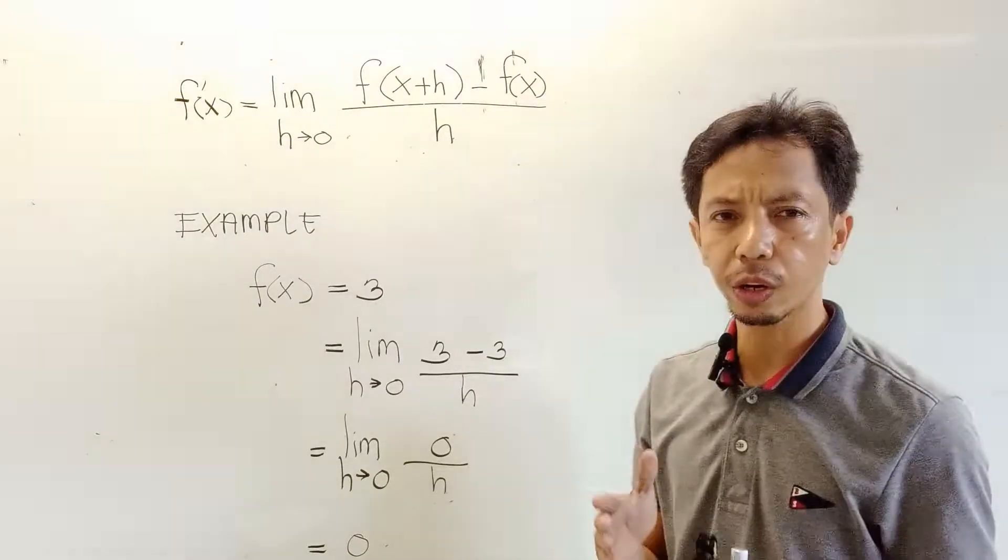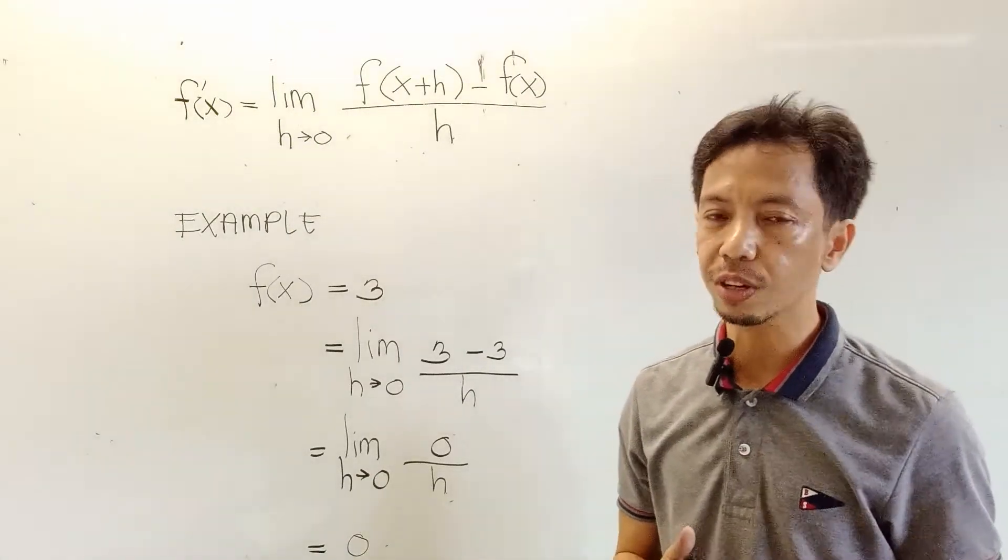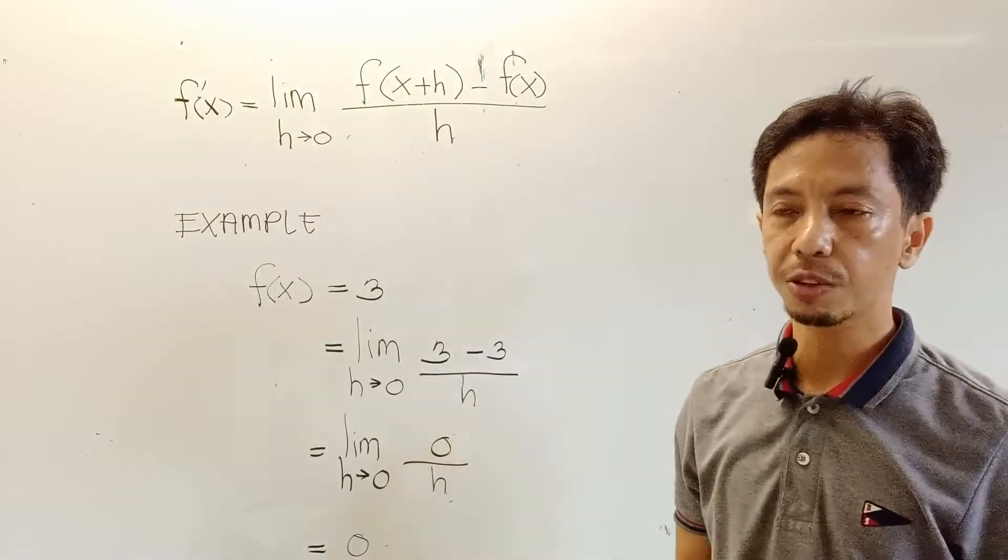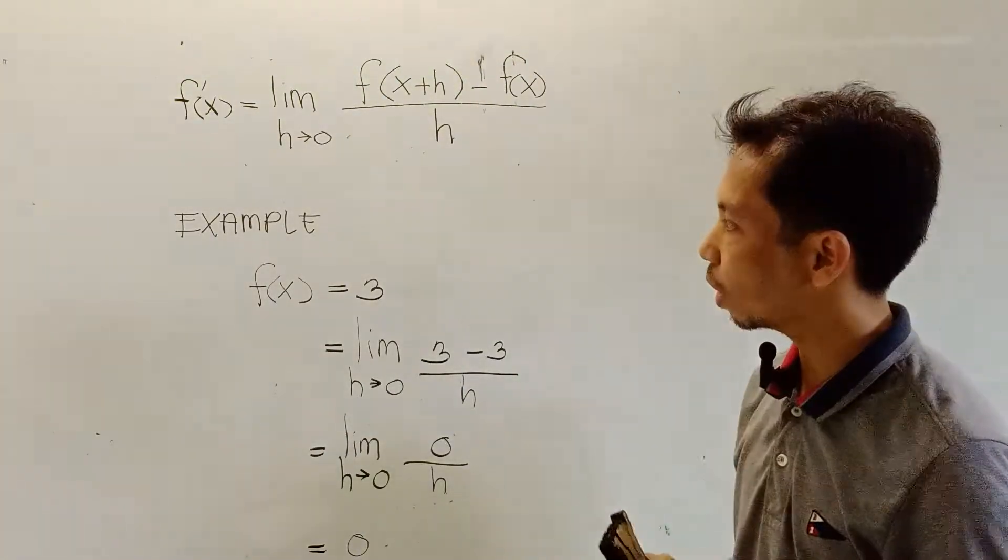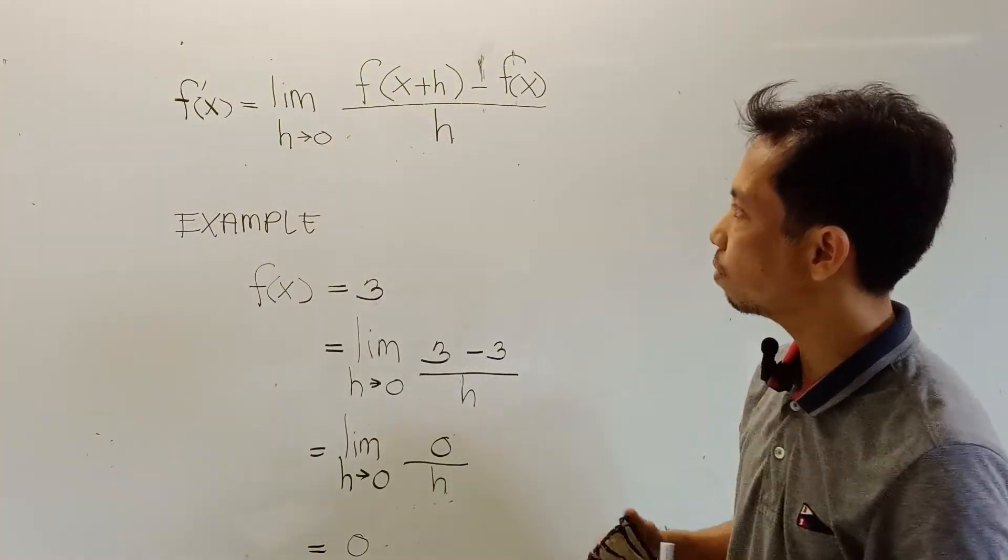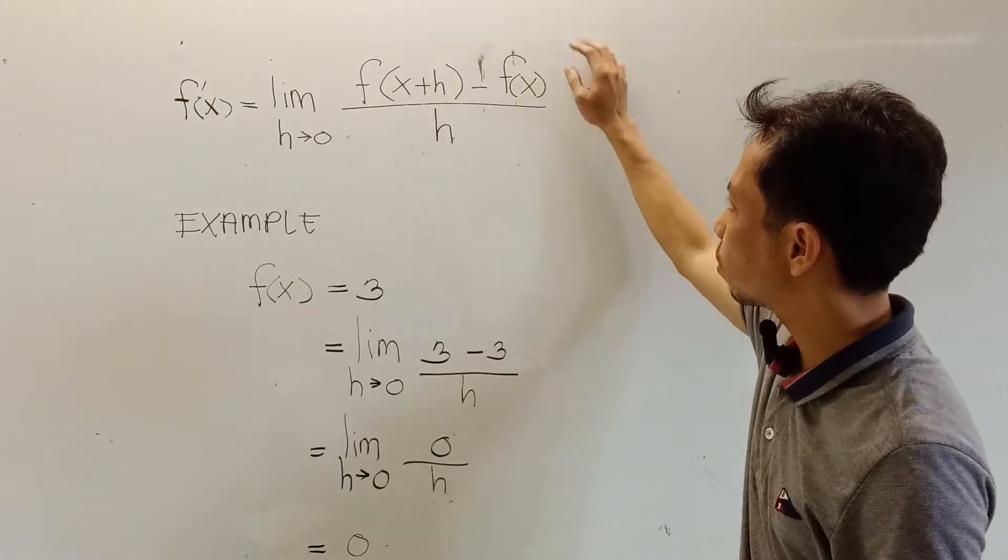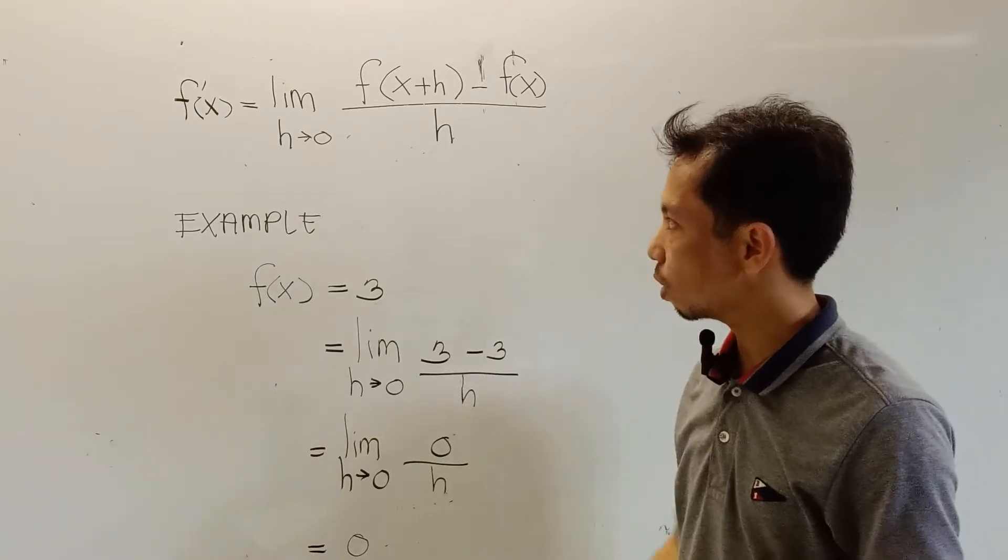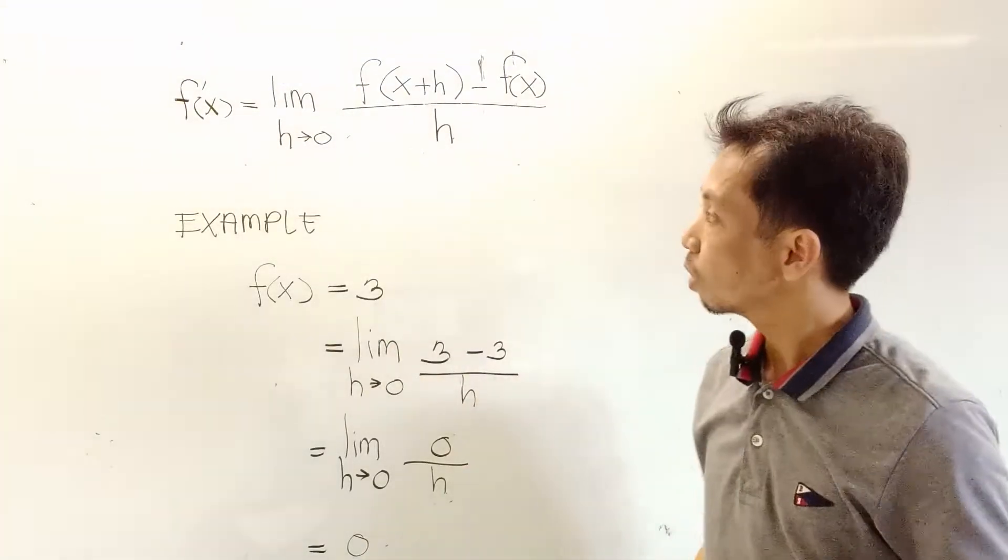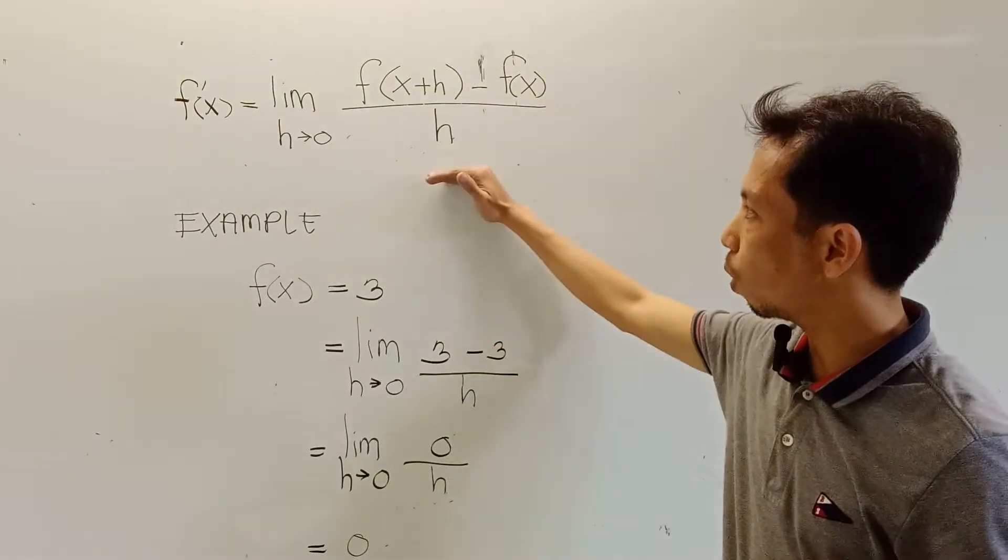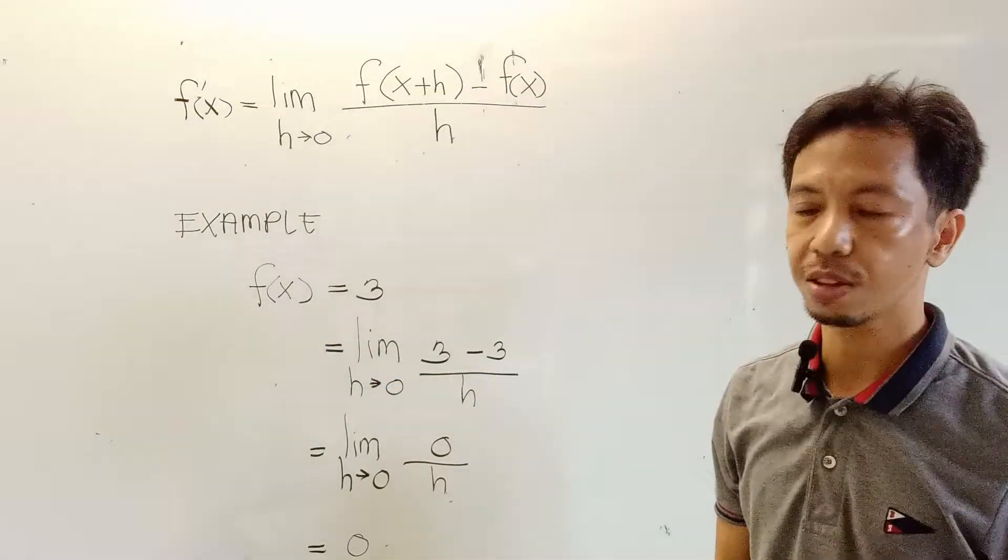Alright, so today we are going to find the derivative of a constant using the definition of limits. The definition of limits says that in finding the derivative of a constant, we have the limit of f(x+h) minus f(x) all over h as h approaches 0. So this is the definition of limits and we are going to use this one in finding the derivative of a constant.